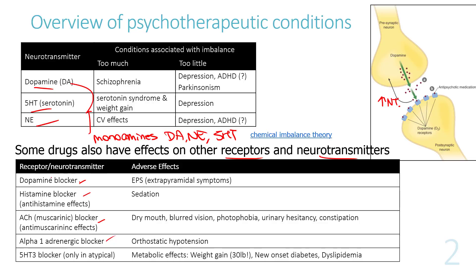Blocking too many dopamine receptors causes movement disorders categorized as extrapyramidal symptoms (EPS). The antihistamine effect causes sedation; blocking muscarinic acetylcholine receptors causes anti-muscarinic effects; and blocking alpha-1 adrenergic receptors on blood vessels causes vasodilation and orthostatic hypotension.